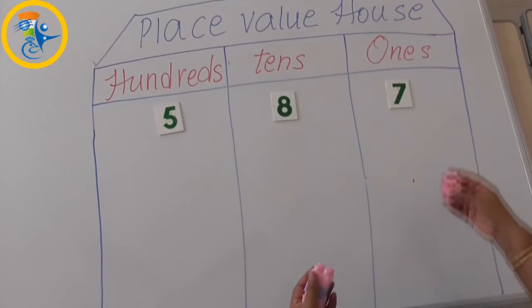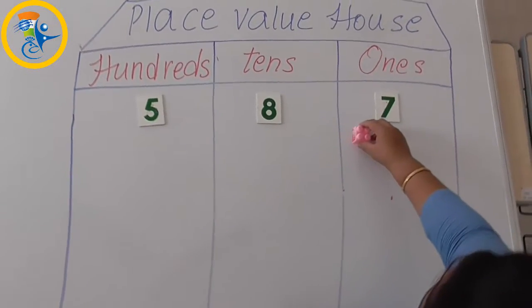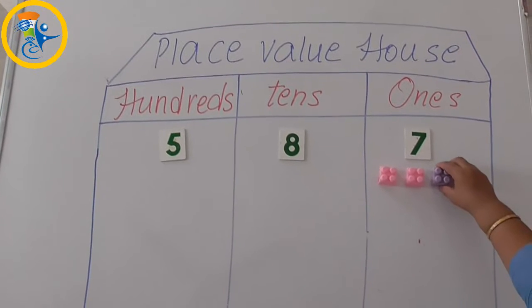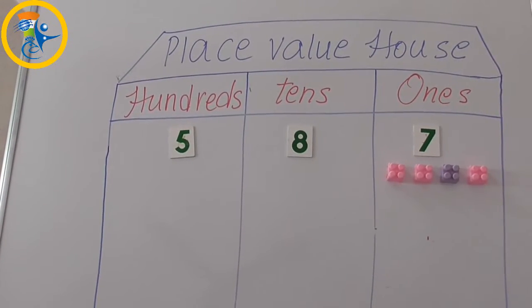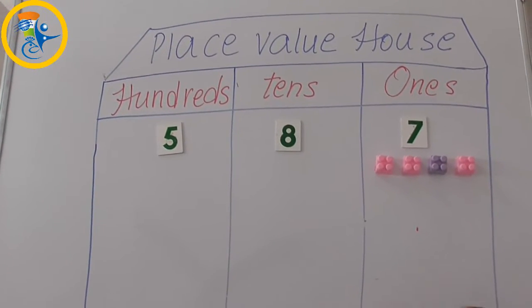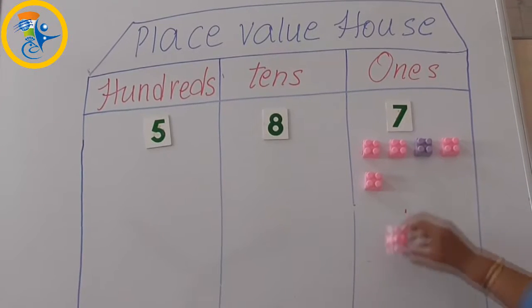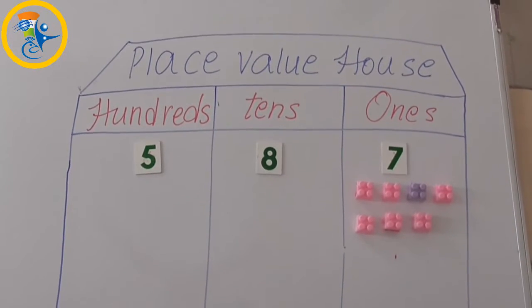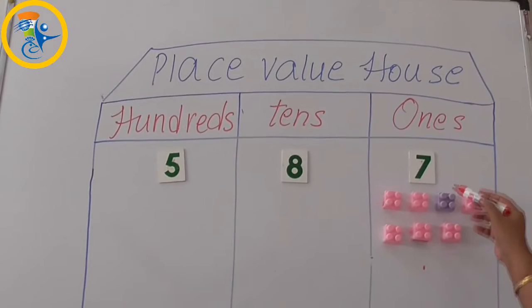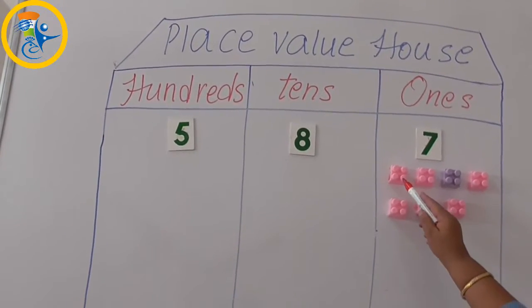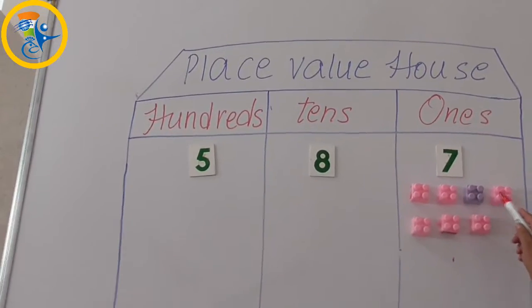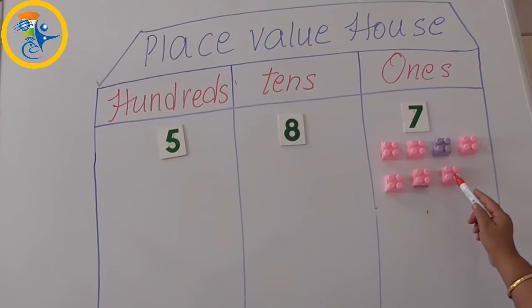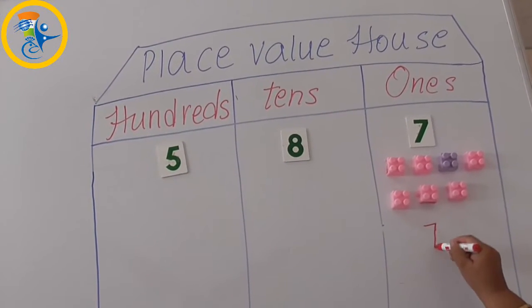We will understand the value of 7 at ones with the help of blocks: 1, 2, 3, 4, 5, 6, 7. So the value of 7 at ones is 7.